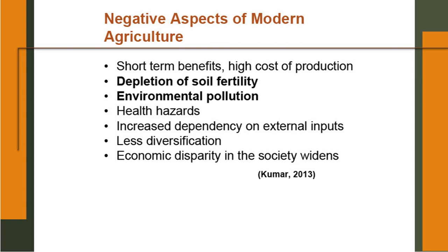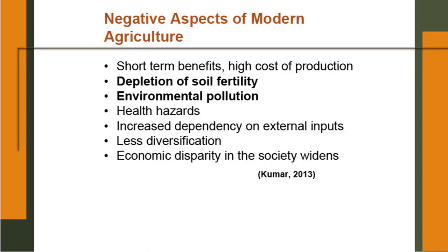Health hazards are also there. Our food is laced with many pesticides; in some places there is indiscriminate use of pesticides and many times these residues may be beyond the permissible limit. Some heavy metals may also reach our food. Increased dependency on external inputs — very few farm inputs are recycled on the farm and most of the time farmers buy their inputs from the market. Less diversification — the number of crops farmers were growing 30-40 years ago has declined; for example, in Punjab 20-25 years ago they were growing more than 15 crops, but now they have only 6-7 crops. Economic disparity in society widens — the gap between rich and poor is increasing and this may be partly a result of modern agriculture.